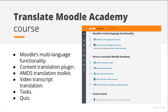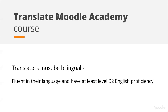The course also covers video transcript translation. There are several hands-on tasks for participants to put their knowledge into practice, and a quiz to check understanding at the end. The course has a few features that make it slightly different from other Academy courses. We're upskilling community members to take on the role of translating content, so there are tasks and requirements to demonstrate competence. Anyone wanting to become a translator must be bilingual — fluent in the language they're translating into and have at least level B2 English proficiency.